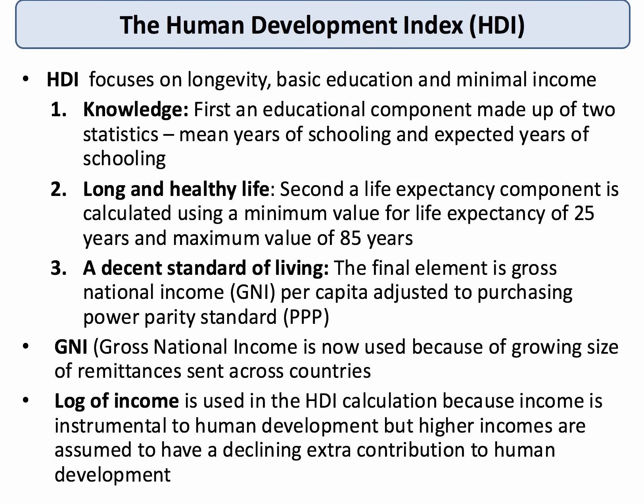Gross national income is now used because remittances flows are becoming more significant — there is a separate topic video on the economics of remittances on the YouTube channel. The HDI score in total can be between zero and one, with each component counting for one third. The log of income is used in HDI calculations because as incomes rise they create more opportunities, but the model assumes higher incomes make a diminishing contribution to human development.